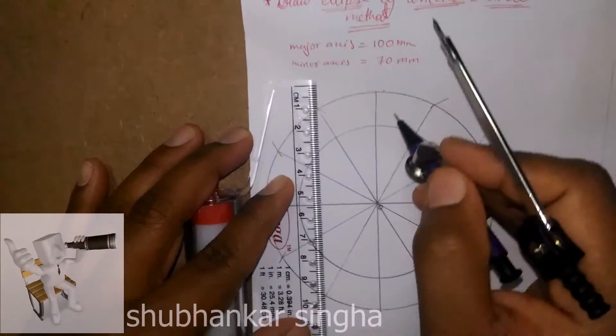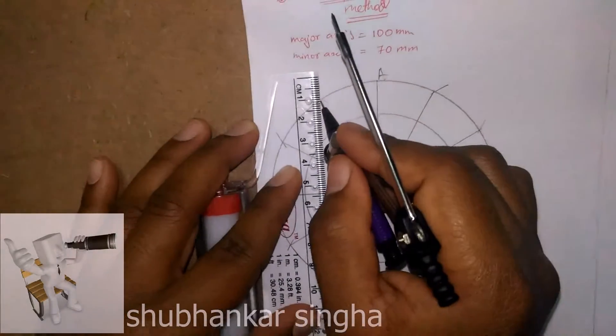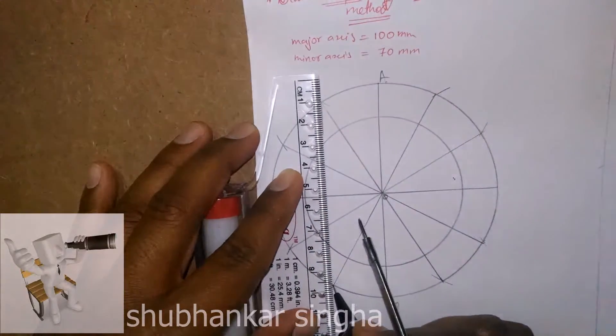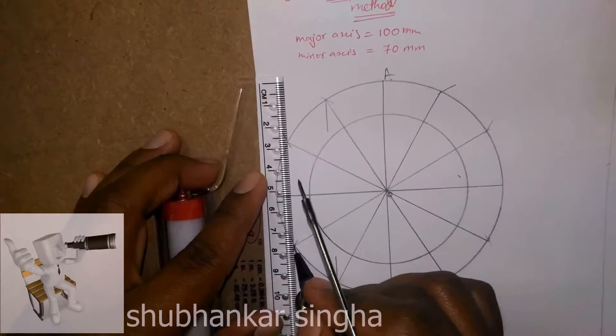Draw parallel to this line, parallel to AB, from every point.